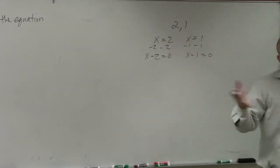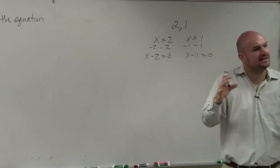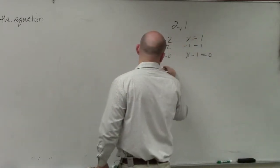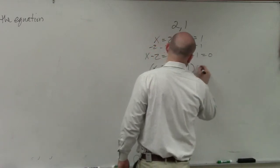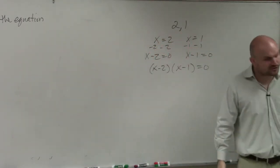Now why did we set these equal to 0? Because these are factors. So we write our factors multiplied equal to 0. So you write x minus 2 times x minus 1 equals 0. But why did we set our factors equal to 0? Because that was our first rule, right?